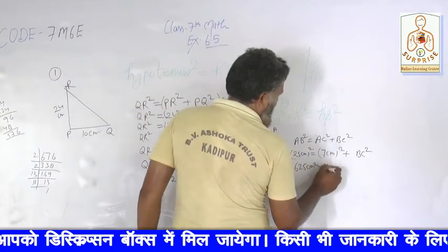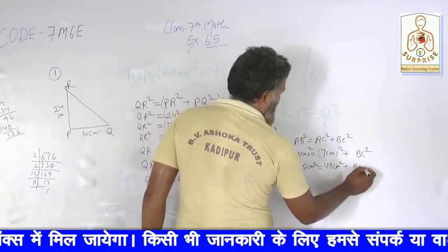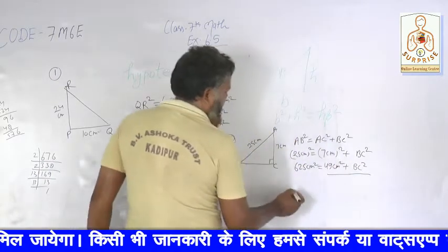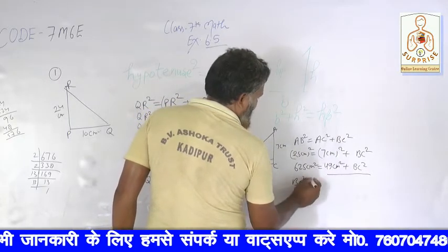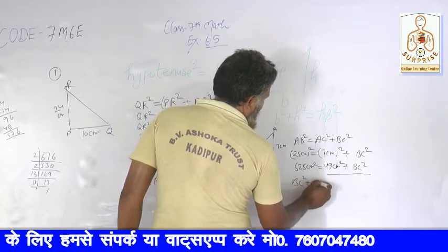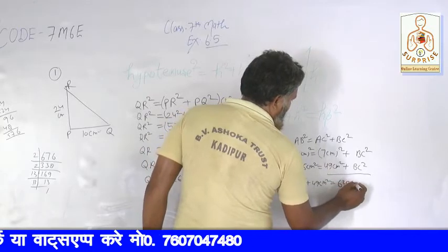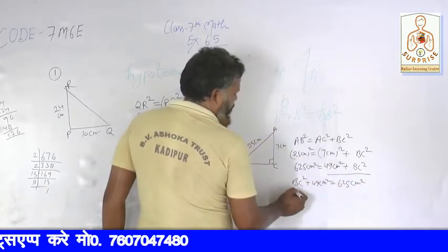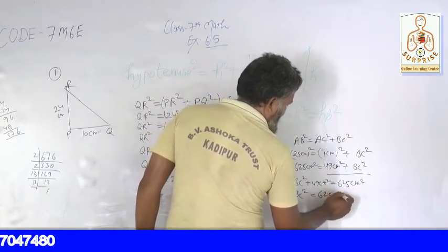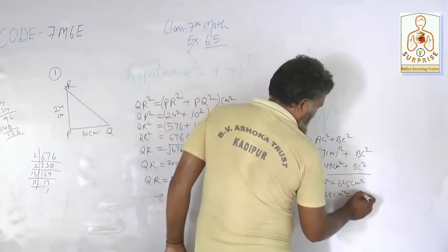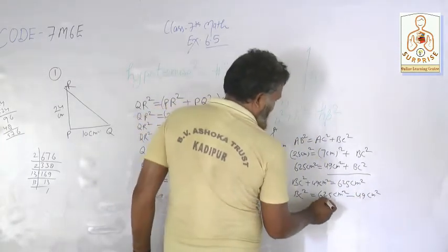7² = 49 cm square, plus BC square. Chaliye isko solve karte hain: BC square is equal to BC square plus 49 cm square is equal to 625 cm square. Toh BC square is equal to 625 cm square minus 49 cm square.